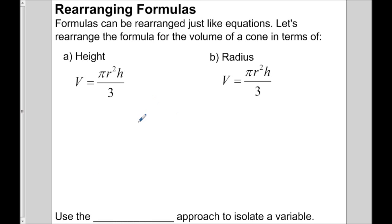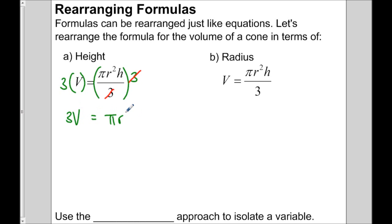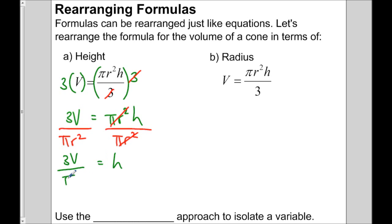Let's pretend we don't have any numbers and just rearrange the formula so that instead of V equals, it says h equals. We want to isolate h. There's a fraction divided by 3, so to get rid of it I'll multiply both sides by 3. The 3s divide out, leaving 3v equals pi r squared h. Now pi r squared is multiplying h, so I divide both sides by pi r squared. The pi r squareds divide out, leaving h on the right and 3v over pi r squared on the left.